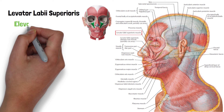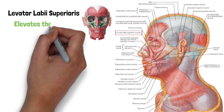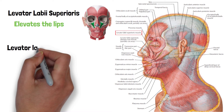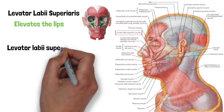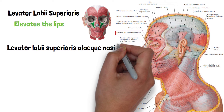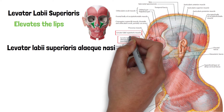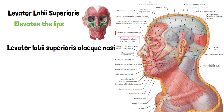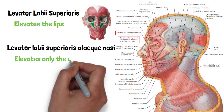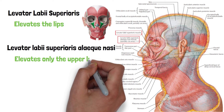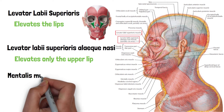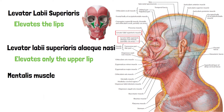Some of the other muscles that also help in elevating the lips include levator labii superioris alaeque nasi, a muscle that lifts the angle of the nose along with the lips, and zygomaticus minor, which elevates only the upper lip. Similarly, the muscle of the chin, the mentalis muscle, elevates and protrudes only the lower lip.